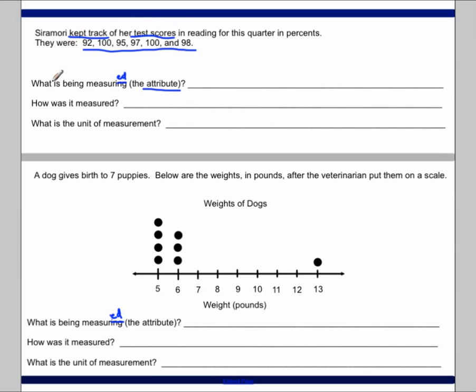So first of all, what is being measured? What does the 92, the 100, the 95, the 97, the 100, and the 98 represent? Well, they represent Siramori's test scores. So that's the attribute, or that's the thing that we are measuring. So Siramori's test scores this quarter.